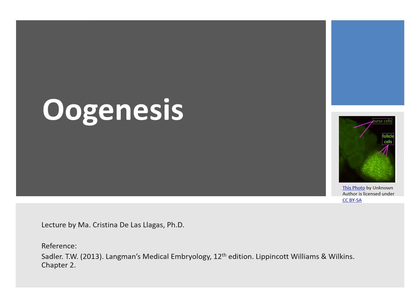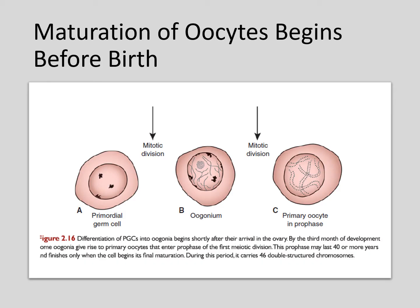The development of female gametes through meiosis and cytodifferentiation is called oogenesis. The primordial germ cells arrive at the gonad and can undergo mitotic division in order to proliferate. Later, they differentiate to form the oogonium, which can also undergo mitosis to produce more oogonia. Some of the oogonia differentiate into primary oocytes and become arrested in prophase I, which may last as long as 40 years or more, finishing only when the cell begins its final maturation.